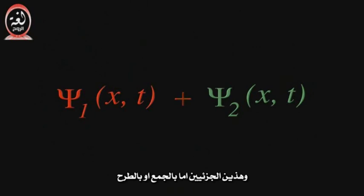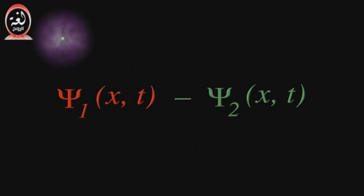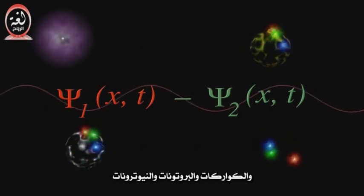This new two-particle wave function will have two parts to it, and those parts will either add or subtract. Physicists would say this makes the wave function either symmetric or anti-symmetric. And it turns out that only the anti-symmetric function works for electrons, quarks, protons, and neutrons.